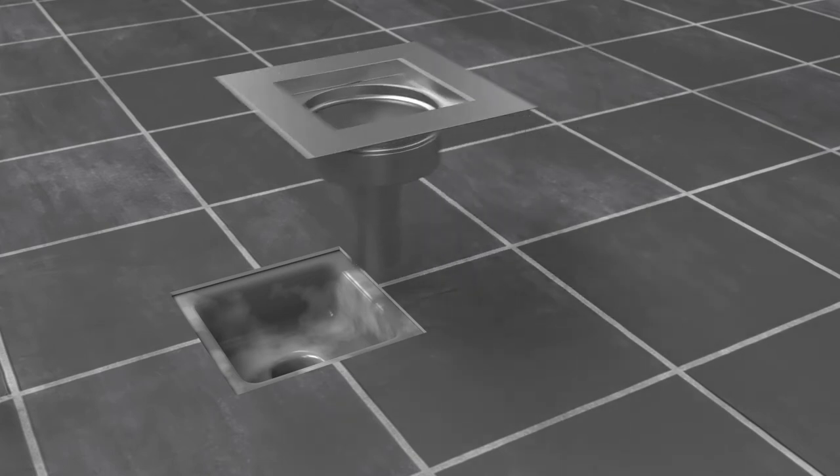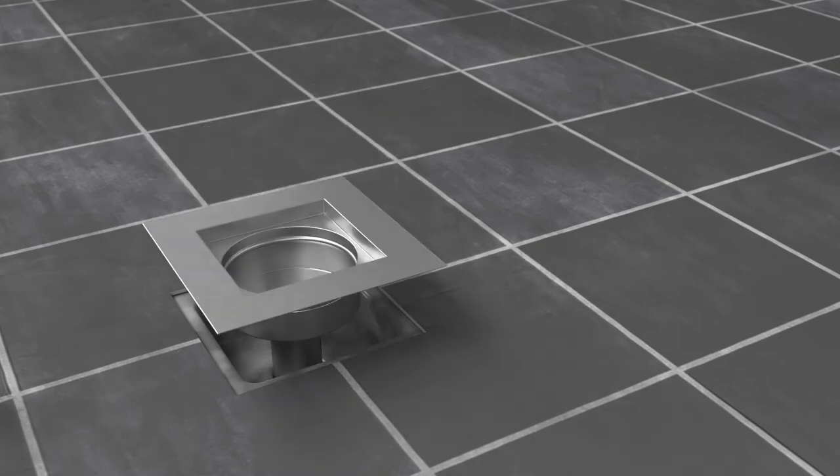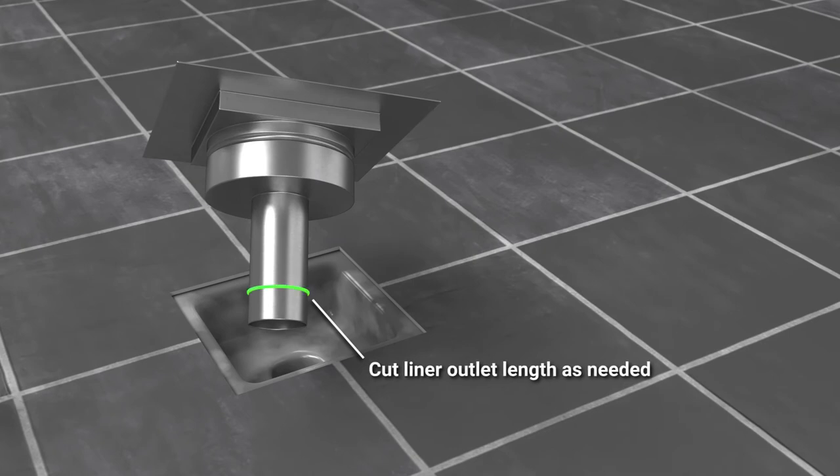First, confirm that the total height of the liner will fit into the existing floor sink or drain. Be sure the liner outlet does not bottom out on the installed drain pipe elbow or other restriction. Cut the liner outlet length as needed.